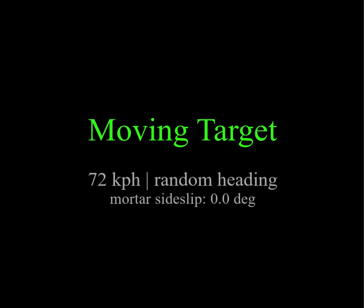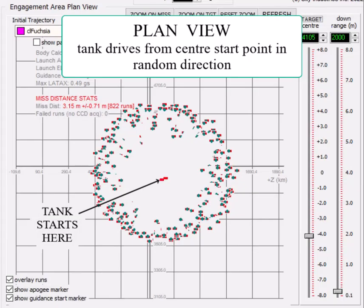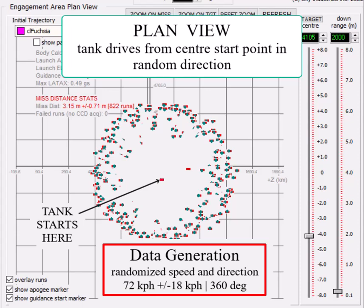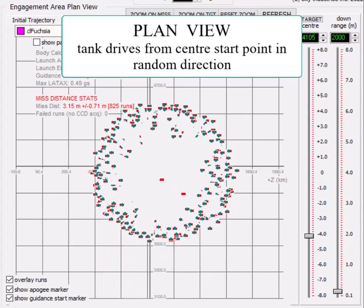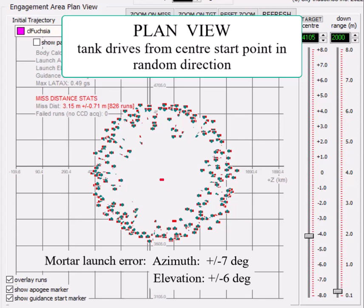I decided to have a look at the effect of target motion. Population generation looks like this. In each case, the tank drives in a straight line away from a common starting point at a random speed, about 70 kilometers an hour plus or minus 20 kilometers an hour, in a random direction. The mortar launch error is also random, plus or minus 7 degrees in azimuth and plus or minus 6 degrees in elevation, which seems pretty sloppy. These are pretty big errors.